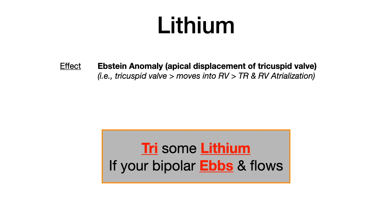The mnemonic for lithium is: 'Try some lithium if your bipolar ebbs and flows.' 'Try' is for tricuspid valve — remember which valve is affected. 'Lithium' tells you the drug. And 'ebbs' stands for Ebstein anomaly.